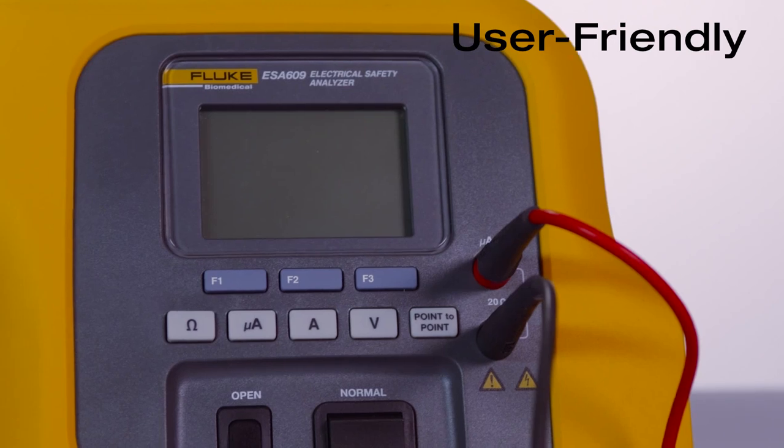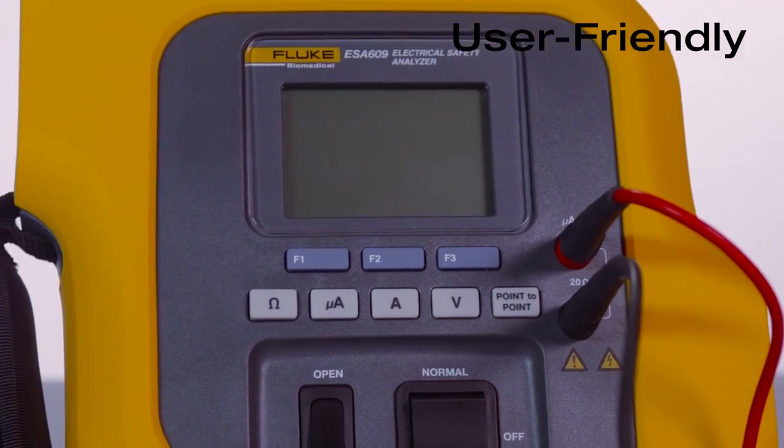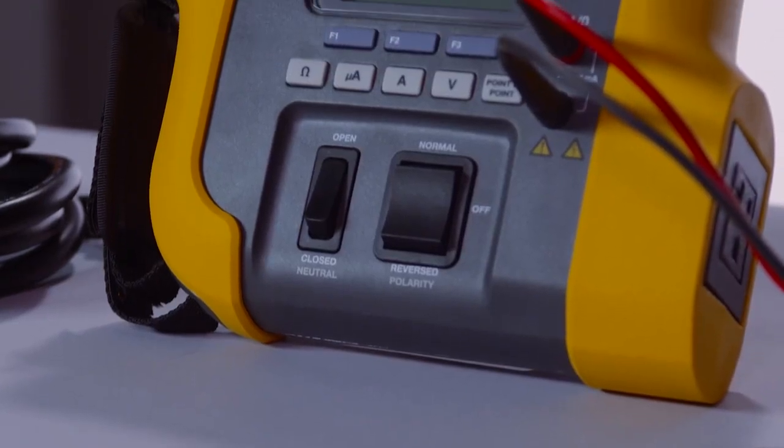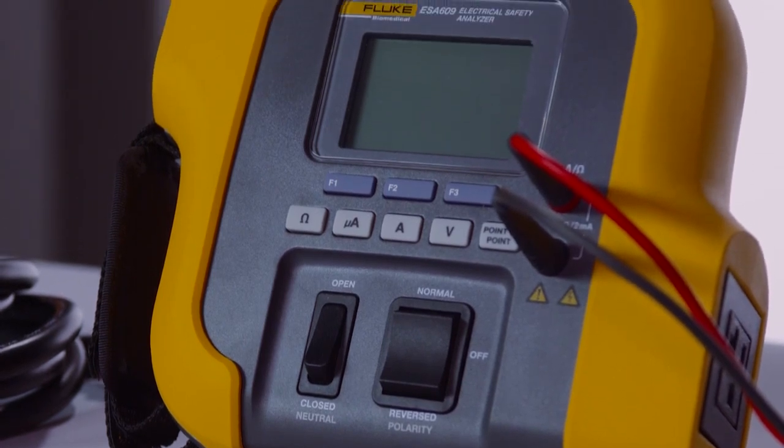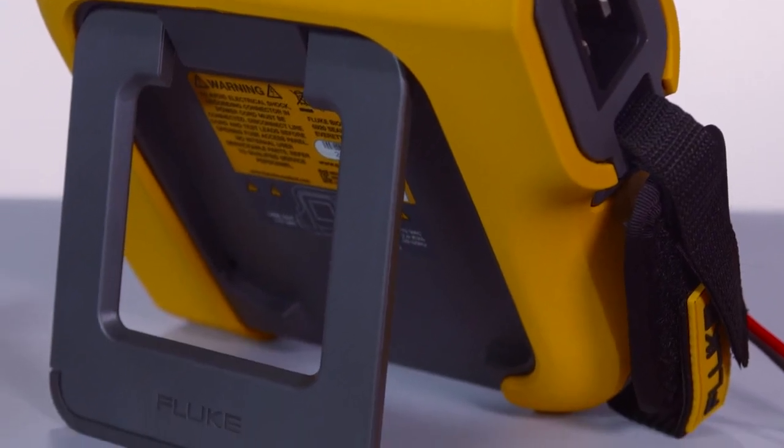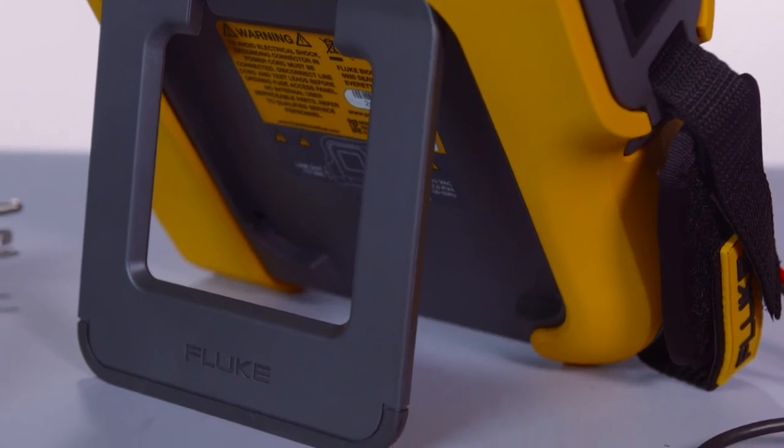Notice how the ESA609 only has a few buttons. This user-friendly design allows for rapid testing and ease of use. It also has a tilt stand giving you multiple viewing options while testing.